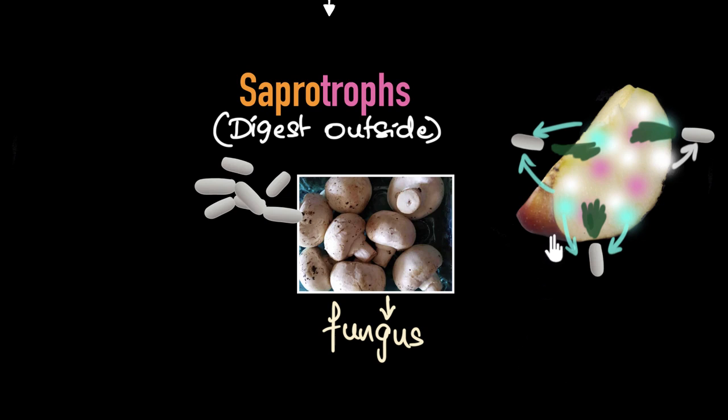But why does it rot and start smelling? Well, that's because whenever digestion is happening, whenever chemical reactions are happening, some byproduct is created. And it's these byproducts that start making things rot. And that's what makes the whole thing smell as well. And because of that more insects get attracted and now you can't eat this. And this sounds very disgusting, right?